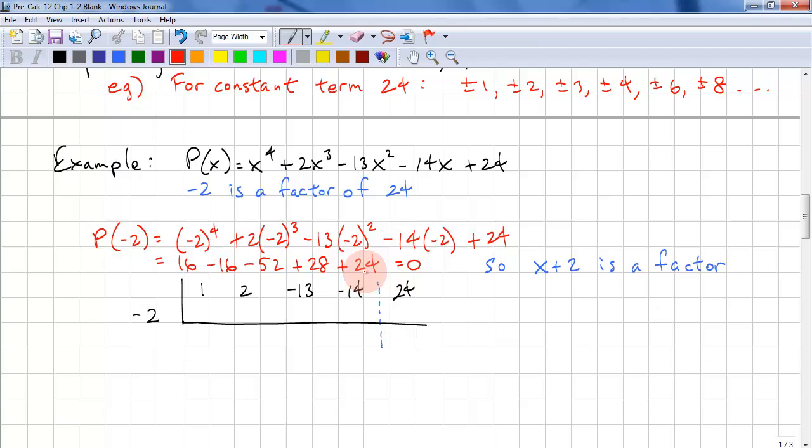16's cancel out. 28 plus 24 is 52, so that cancels out with negative 52. So that means x plus 2 is a factor.